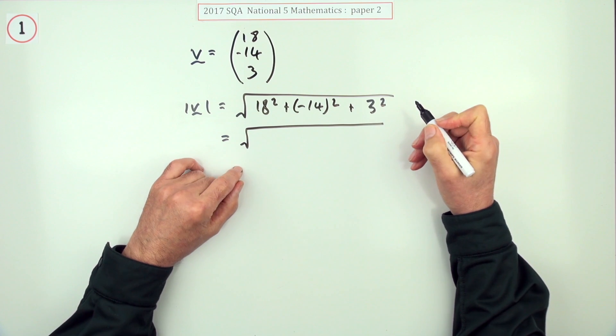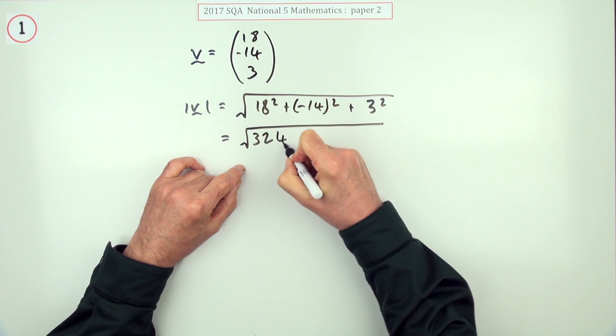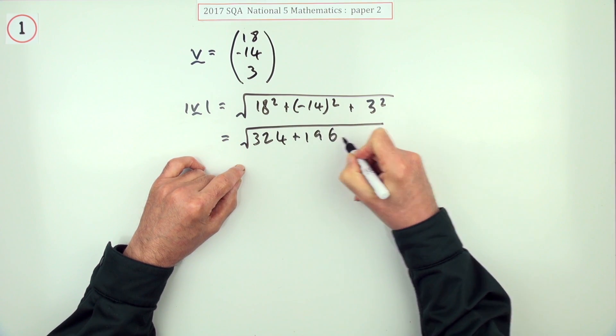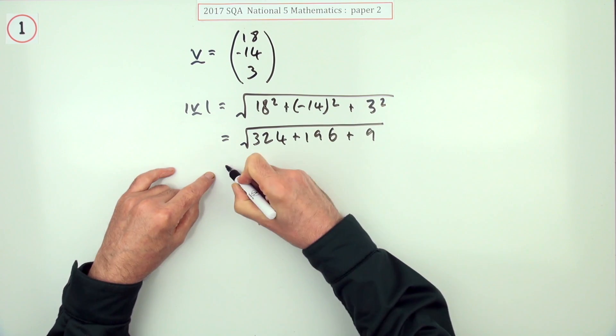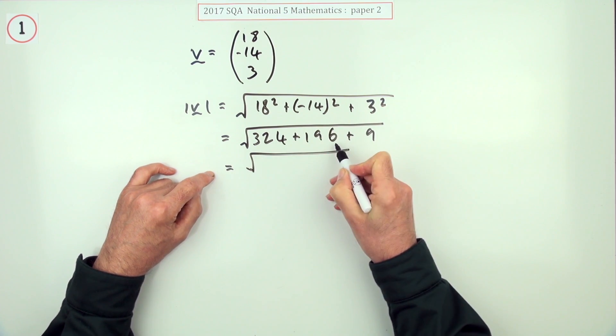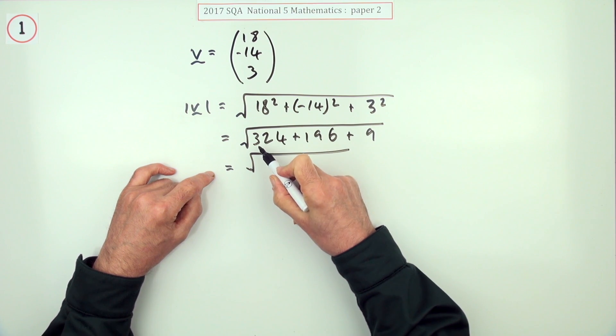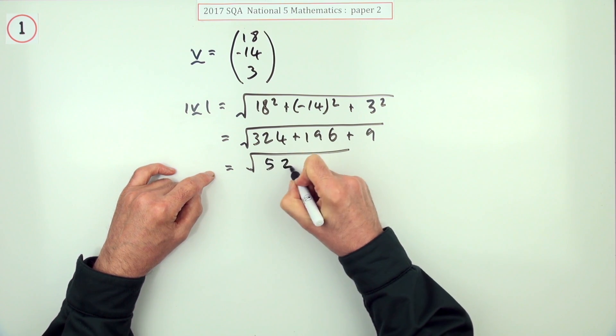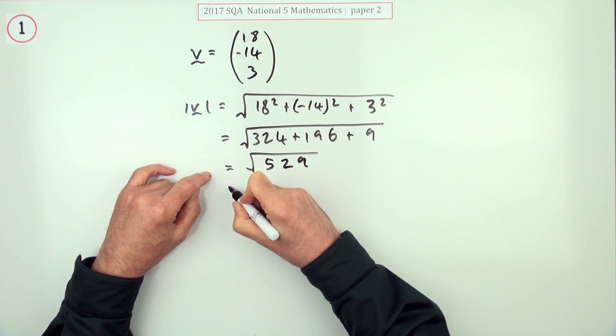That's 324, that's 196, those ones are easy enough. And that adds up to - that's 200 onto that but take away four - so that makes that 529. 529 looks suspicious but I don't really know it was a whole number, but it needn't have been because it is paper two.